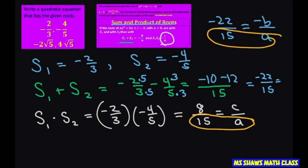Since they do, we can just write down everything. Our a is 15. Our b is going to be 22 because negative b is negative 22. And our c is going to be 8. So your equation in standard form is going to be 15x squared plus 22x plus 8 equals 0.